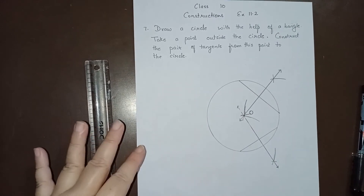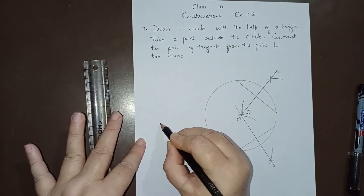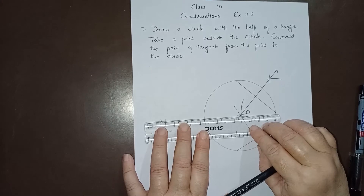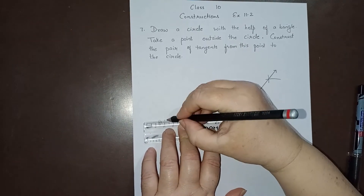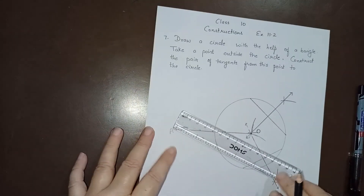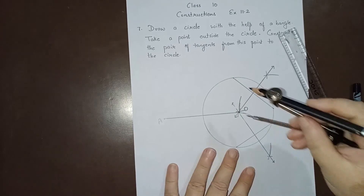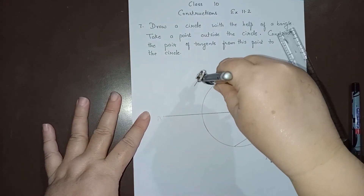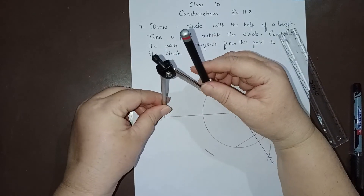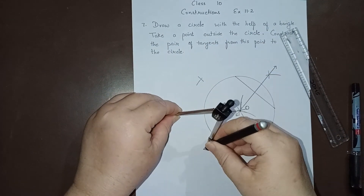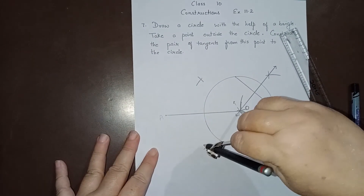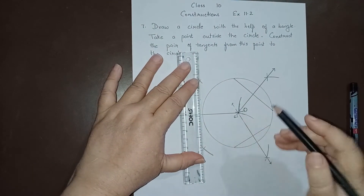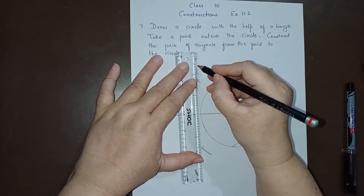This now becomes a simple question. We take an external point A, and from this point we draw tangents as done in the earlier question. Join the external point A with the center O, then draw the perpendicular bisector of OA — drawing arcs from O and then from A.